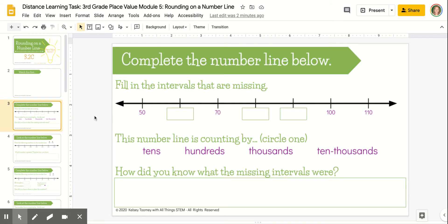In the first task, you're going to evaluate what the number line is counting by and use that to fill in the missing intervals. In order to type your response, all you need to do is double click on the white box with the green outline, and you'll be able to type in your answer.